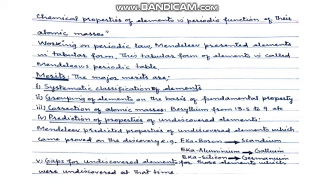Teesra point: correction of atomic masses bhi kar diya. Misaal ke taur par, beryllium ko 13.5 AMU likha jaata tha, lekin isne kaha ki yeh 9 AMU banta hai, isse lena chahiye. Chautha: prediction of properties — jo elements discover nahi bhi hue the, unke naam rakh ke unki properties predict kar di. Jab baad mein germanium, gallium, scandium mile, to unke original naam rakhe gaye aur unki properties usi tarah ki thin jaise Mendeleev ne predict ki thi — yeh badi hairaani ki baat thi.